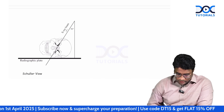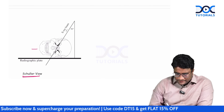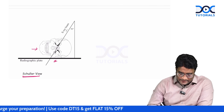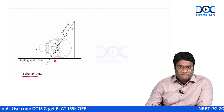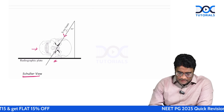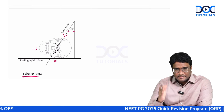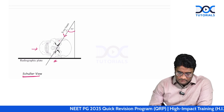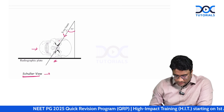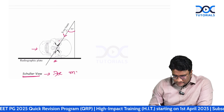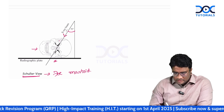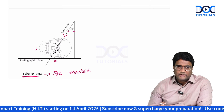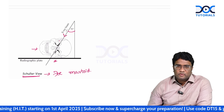In Schuller's view, the skull is placed in contact with the radiographic plate and the x-ray beam is given at an angle of 30 degrees to the baseline. This view goes along the mastoid air cells, so it is used to look at the mastoid.